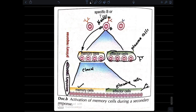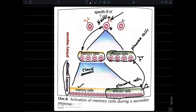If you compare the number of plasma cells in the secondary and primary responses, the secondary immune response has a much greater number of plasma cells, which means they have the ability to secrete more antibodies. This explains why the secondary immune response is more amplified and faster than the primary, since clonal expansion of memory cells is much faster than that of naive B lymphocytes.